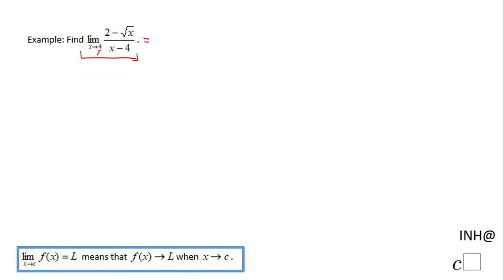In this case, you have (2 - √4)/(4 - 4). We notice 4 - 4 is 0. Also, the numerator 2 - √4 will be 0, and this is what we call an indeterminate form. So we have to find some algebraic technique to get this limit.